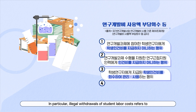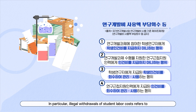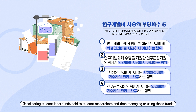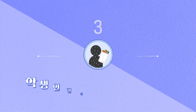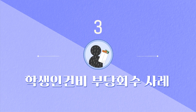In particular, illegal withdrawals of student labor costs refers to not paying student labor funds to student researchers who participated in R&D projects, and collecting student labor funds paid to student researchers, and then managing or using these funds. Let's take a look at actual cases of illegal withdrawals of student labor costs.